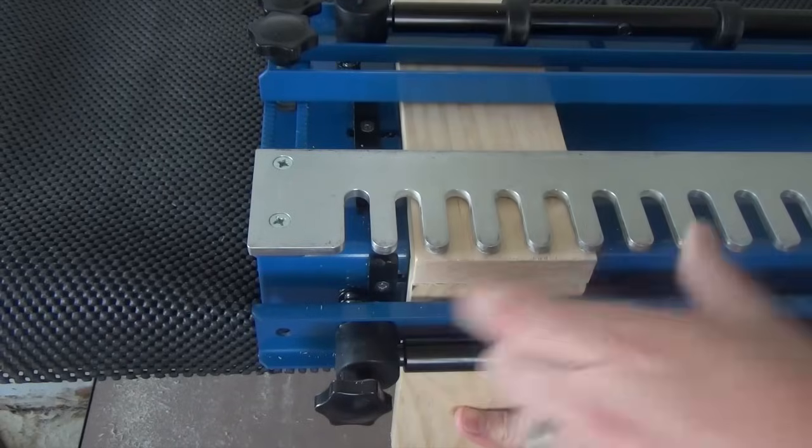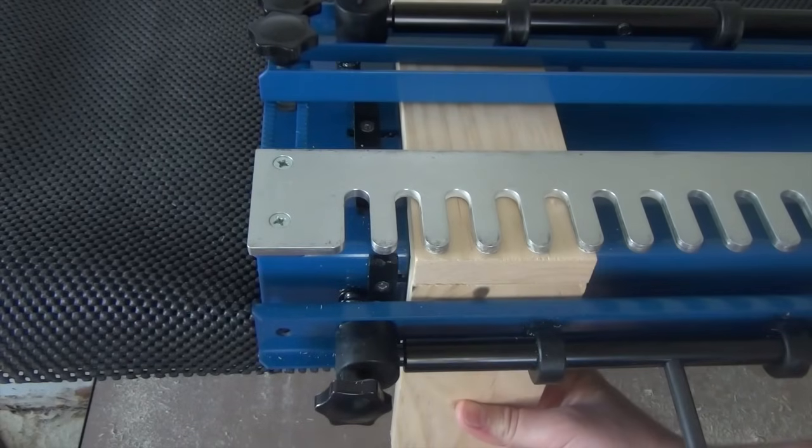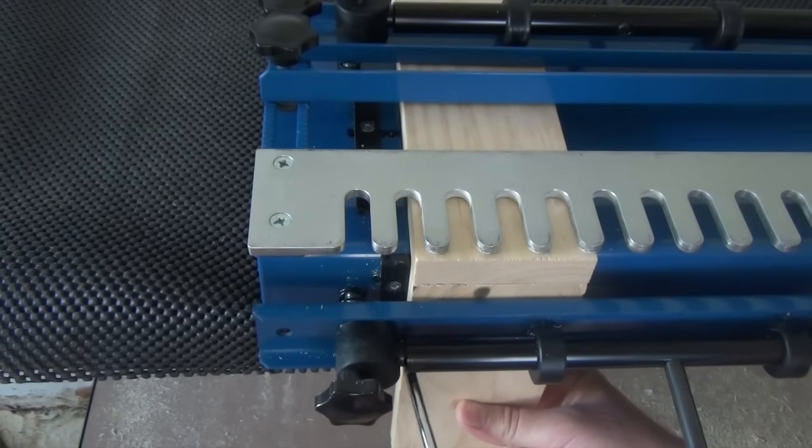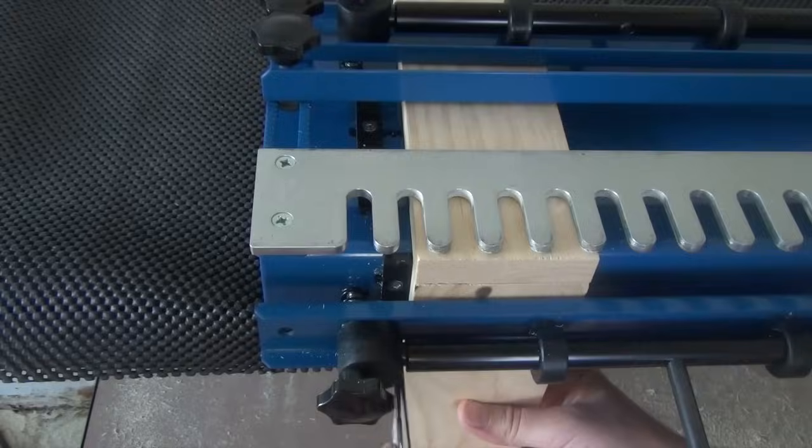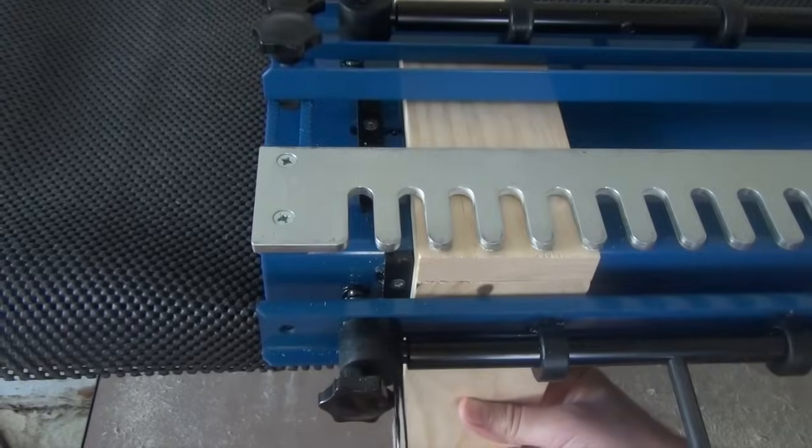Now slide the vertical workpiece up so that the edges are flush with the horizontal workpiece. The Balladonia dovetail jig has cut outs in the vertical clamp so that you can get to the side stop screws without having to remove the front clamp. Tighten the vertical side stop into position.